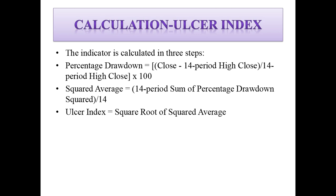So let's look at how it's calculated. The indicator is calculated in three steps. First, you need to get the percentage drawdown. For this you need the closing price, the 14-period highest closing price, and the 14-period high close, and you have to apply them into the formula.